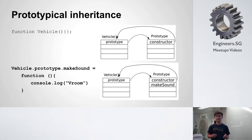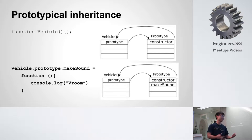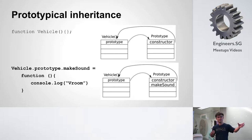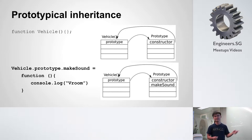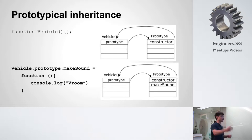Now we want to add a method. In JavaScript, the prototypical way is to add it to the prototype so that all your other instances have a reference to that one function. So let's say I have a function called "make sound" and I add it to the prototype. What actually happens is that in your prototype object, you add a new label called "make sound" which refers to your function.